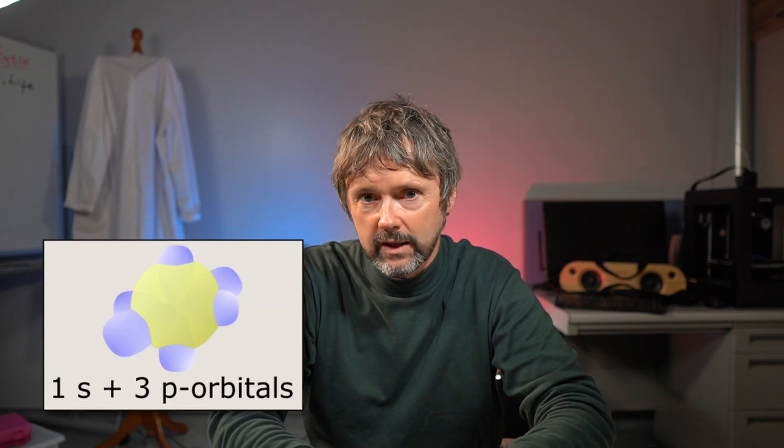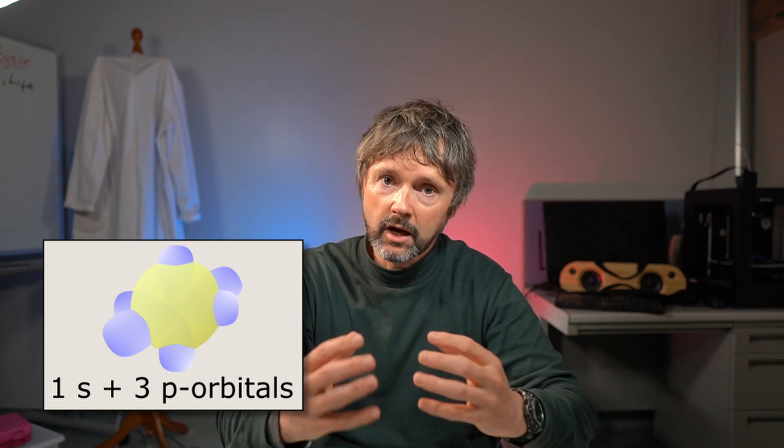Those orbitals are actually three-dimensional waves, which means they can come together and interfere with each other constructively and destructively, and then they can make different shapes — the shapes that we need to get electrons in the places we need them for making three-dimensional shapes for our molecules. And it is these combinations of the sub-orbitals that we call hybrid orbitals.